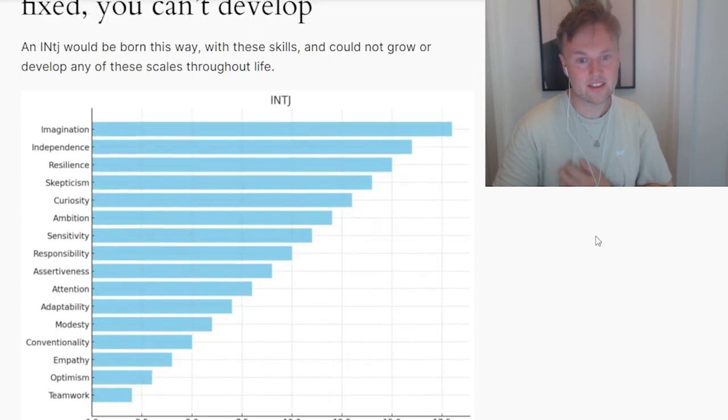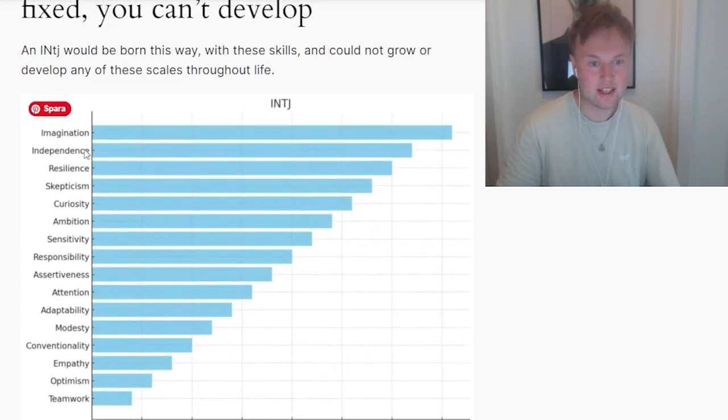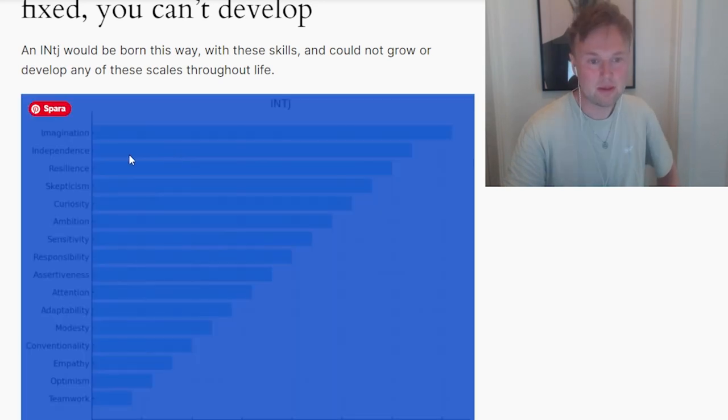So if we look at this scale, for example, we might see an INTJ that can out-compete an ESFP in teamwork and optimism-related skills. Because he's worked on that and he knows how to do it. His 2.5 in optimism is actually 12 when compared to the rest of the population. And his imagination is not just 17.5 in this scale. It's probably 100. So way superior to a lot of people out there.